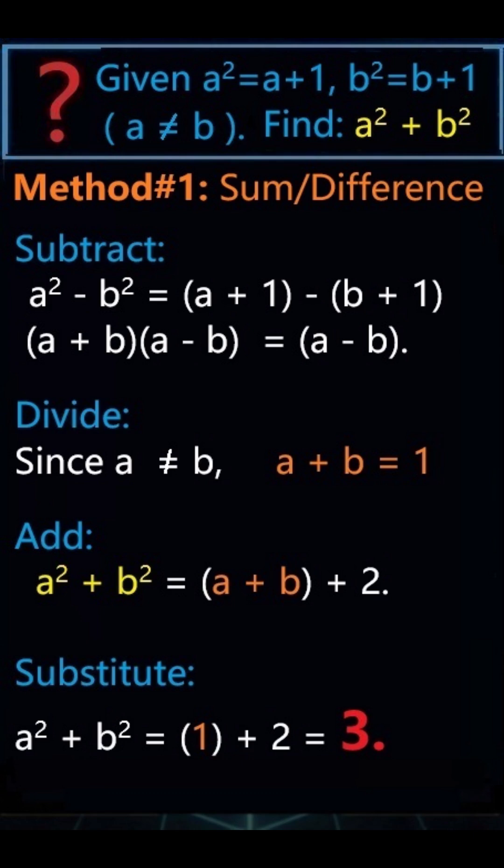Then a square plus b square equals a plus b plus 2, which equals 3.